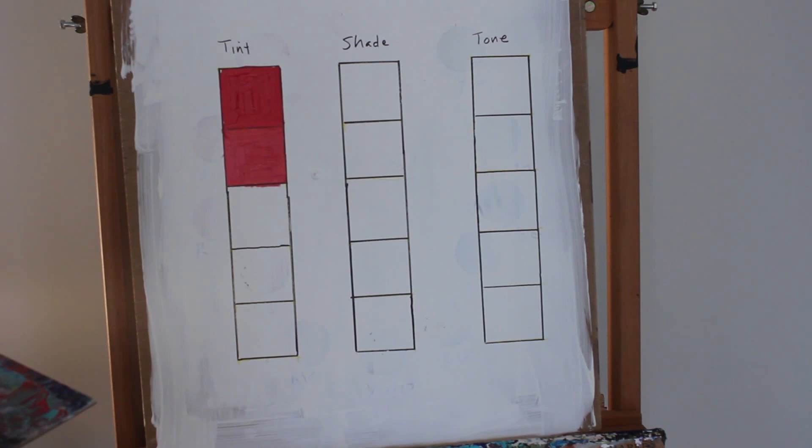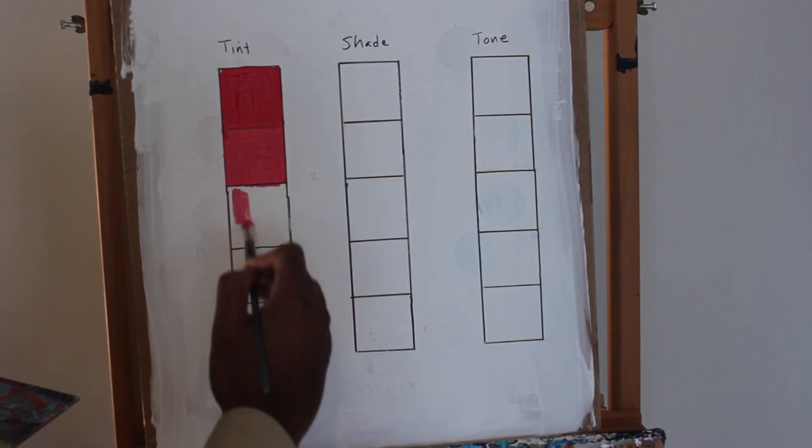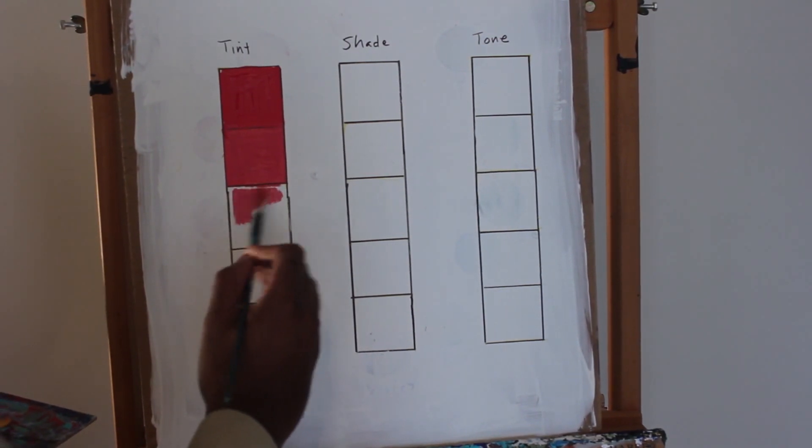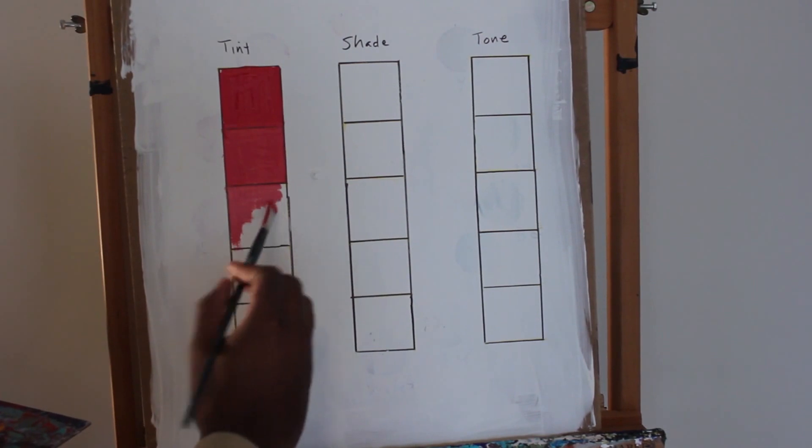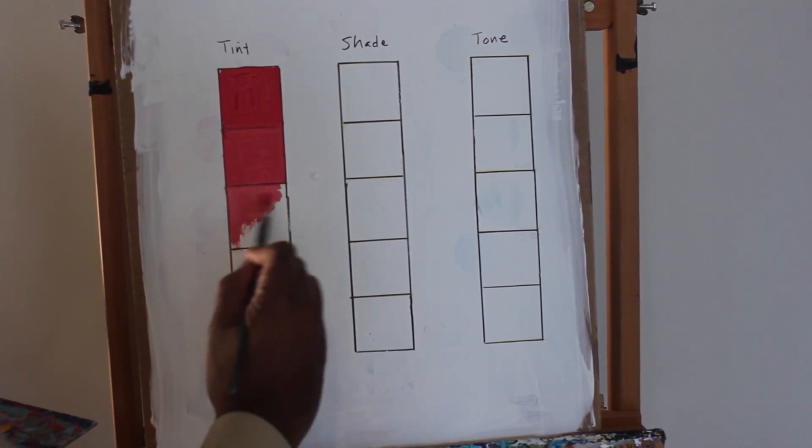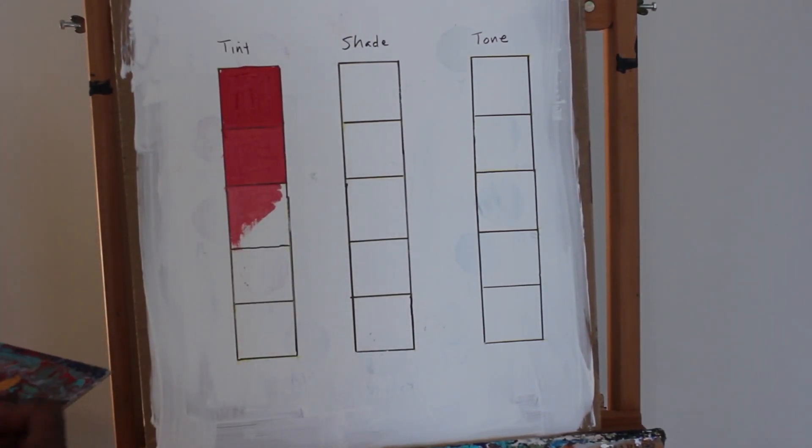These squares are going to get lighter and lighter. My goal is to try to get it as close to white as possible. I don't do it that well in this particular video, but you get the idea. You see my third square is a little bit lighter than my second square.